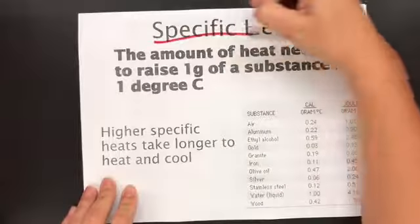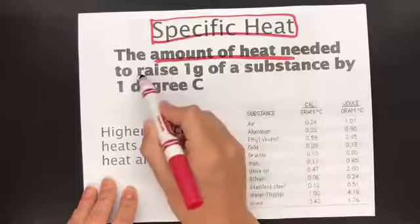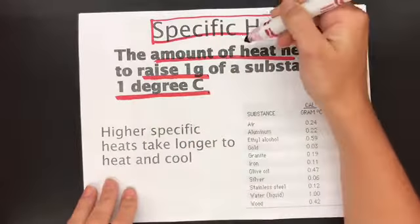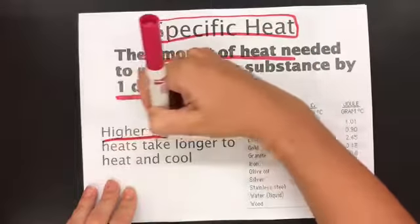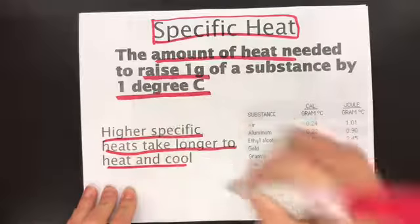One last topic here. Specific heat. Specific heat is the amount of heat needed to raise one gram by one degree Celsius. Amount of heat to raise one gram by one degree Celsius. The higher the specific heat, the longer it takes to heat or cool it.